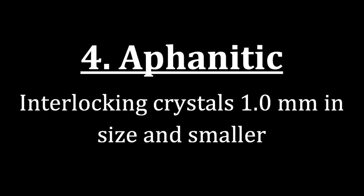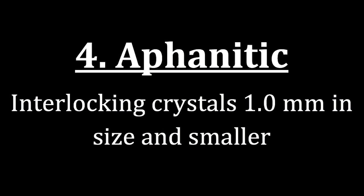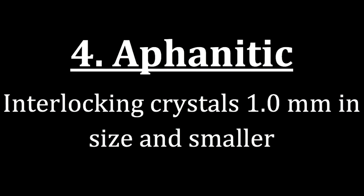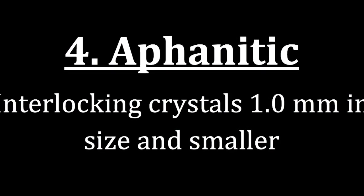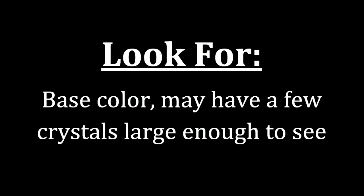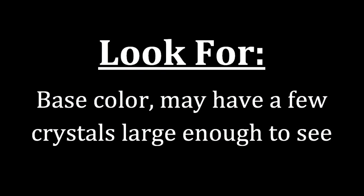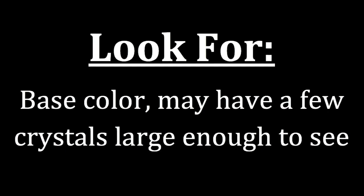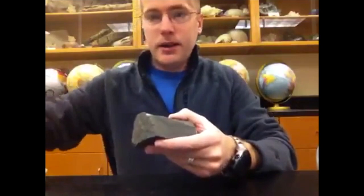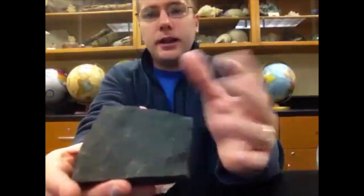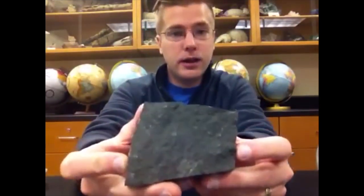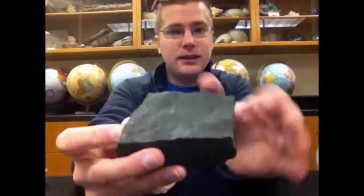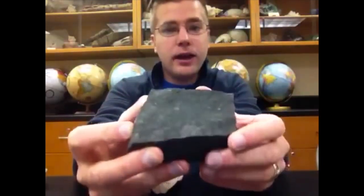The next texture is aphanitic. In aphanitic rocks, we are looking at interlocking crystals of one millimeter in size and smaller — about the size of the white tip of your fingernail. What do we look for? A base color that may have a few crystals large enough to see. Instead of large crystals or bursts of light, we see really one general color making up the rock. When wiggled, the light washes across the surface rather than popping off it.